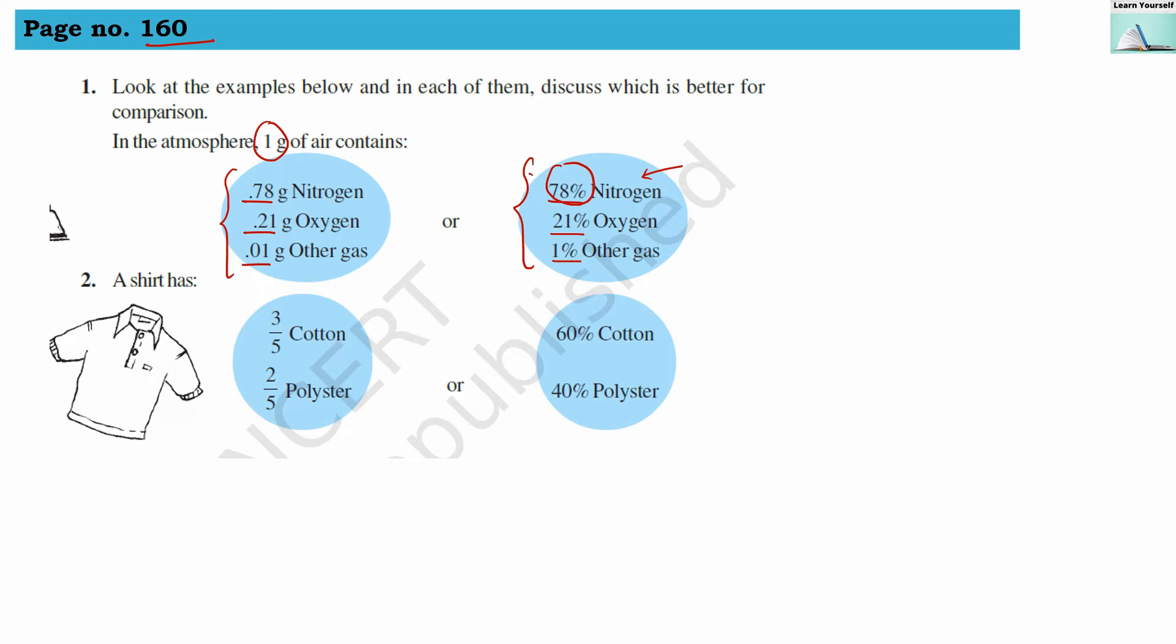The second example: a shirt has 3/5 cotton and 2/5 polyester. Here fraction form is used. We have seen decimal form in the first example; here fraction form is used. In comparison, we have the percentage form: 60 percent cotton and 40 percent polyester, which means cotton's share is more.